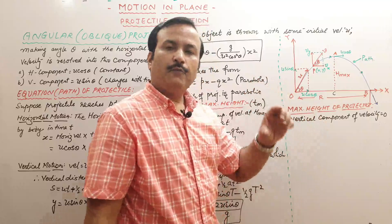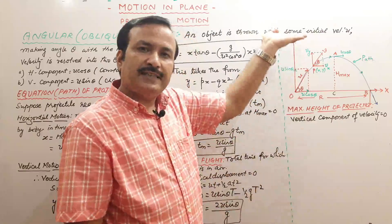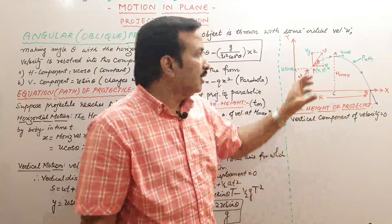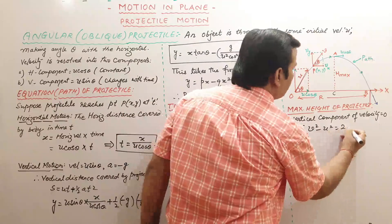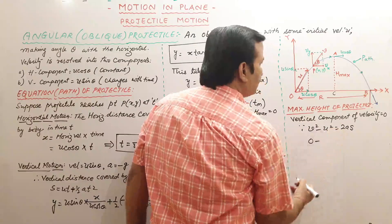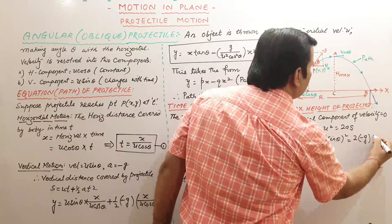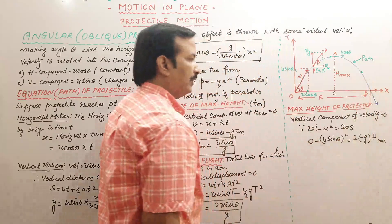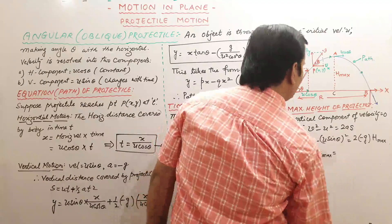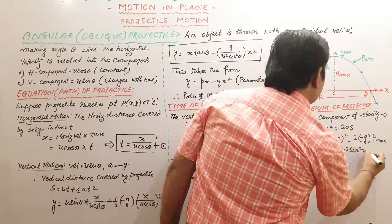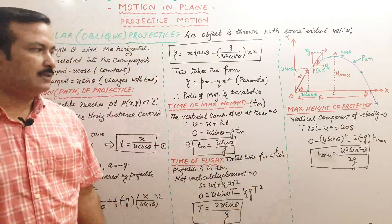Maximum height is the maximum vertical distance covered by the projectile during its flight. At the highest point, vertical velocity is zero. Using v² − u² = 2as: 0 − (u sinθ)² = −2g·H_max. Therefore, H_max = u²sin²θ / 2g. This is the expression for maximum height.